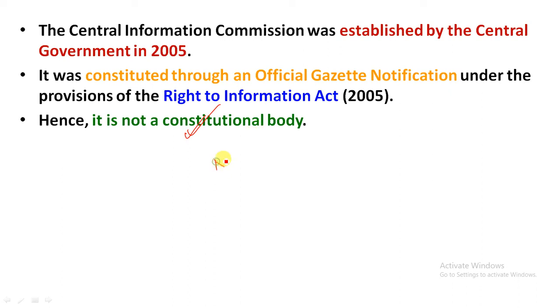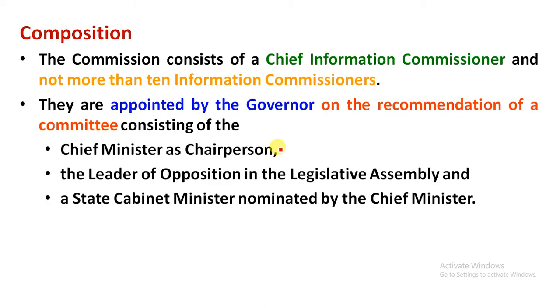The National Information Commission deals with the Central Government and Union Territories, while the State Information Commission deals with the State Government.